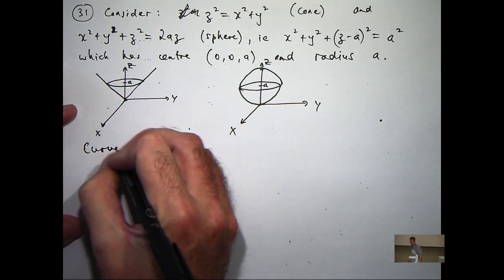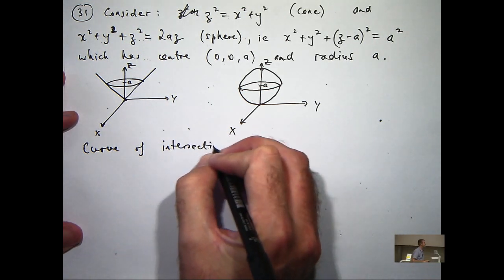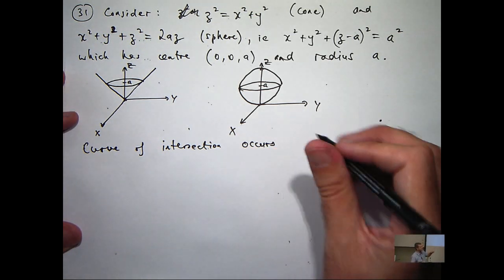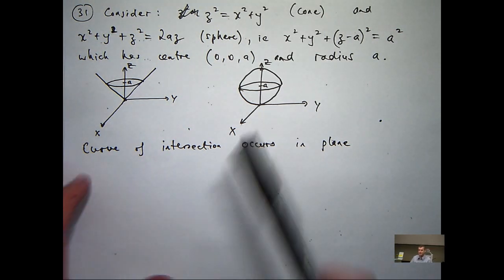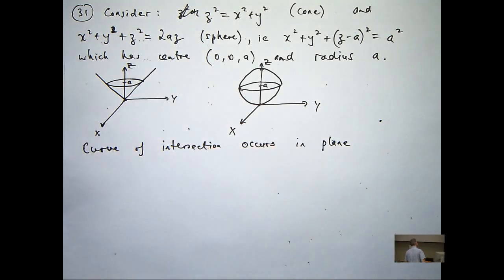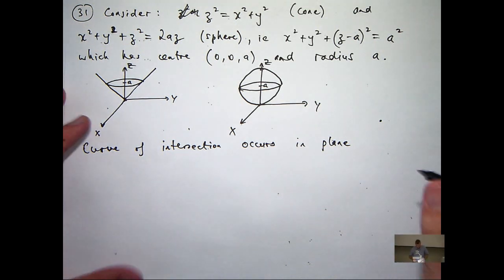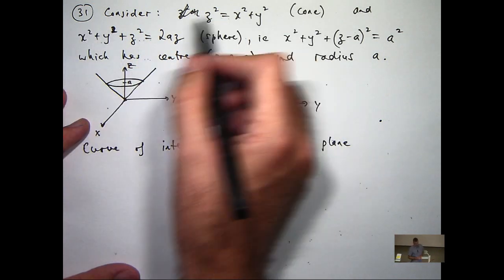Well, all we have to do is really put one of these equations into the other and eliminate the z, really. Oh sorry, eliminate the x and y to find the z-plane. So what I'm going to do is replace x squared plus y squared in here with z squared.